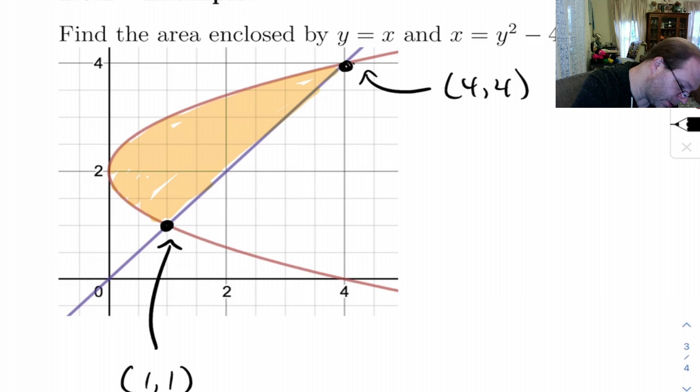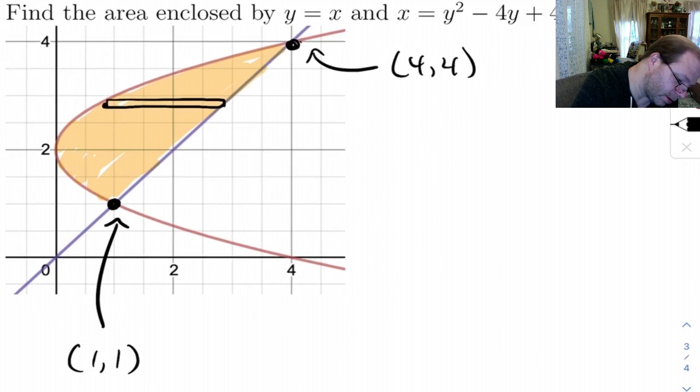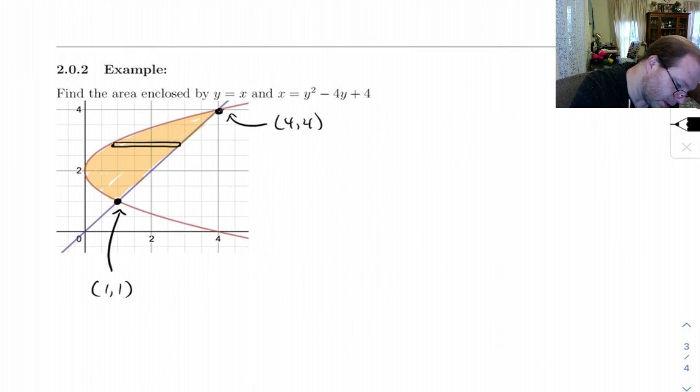I'm going to draw in my rectangle. So let's see, right minus left. On the right is the line, on the left is the parabola. And I've got to be careful here, the line, that's y.